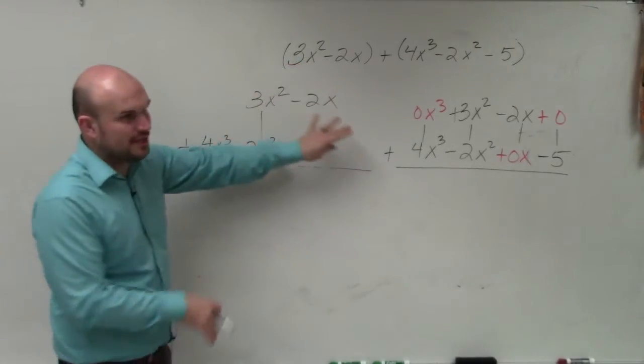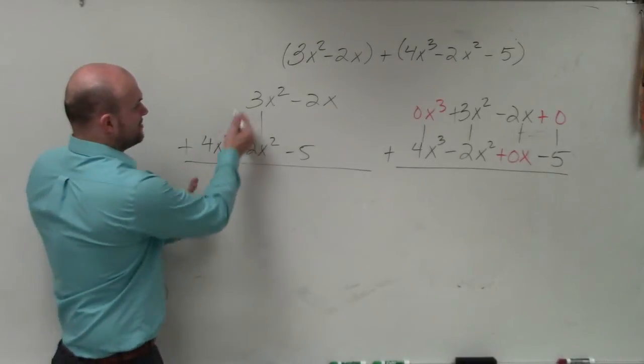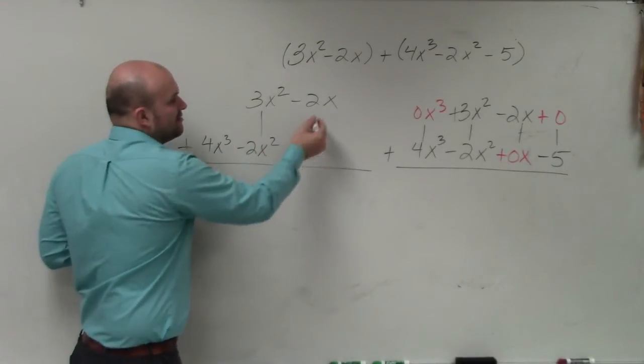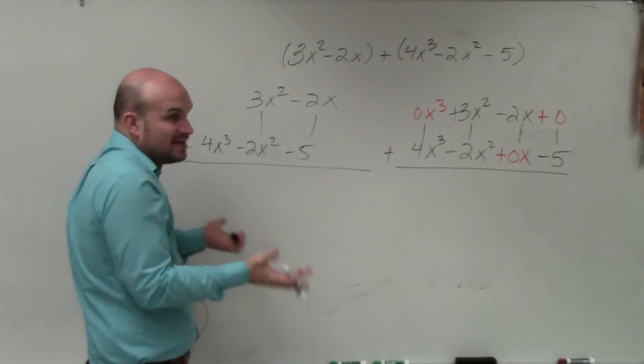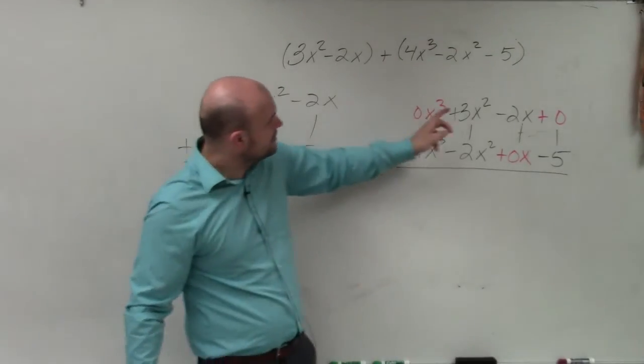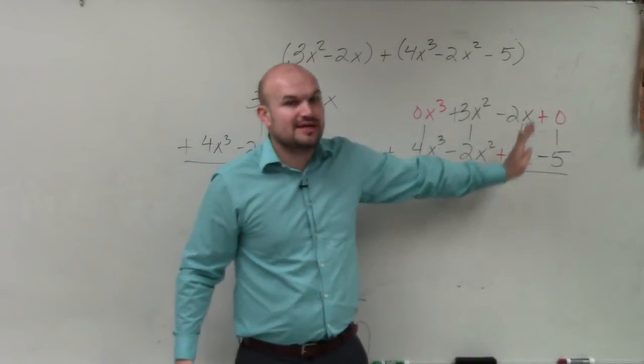This can sometimes get confusing with students because they're like, what combines with what? What am I adding? What am I subtracting? And then they'll make a mental mistake and add negative 2x and 5. Those aren't like terms. You can't combine them. You can only combine like terms with like terms.